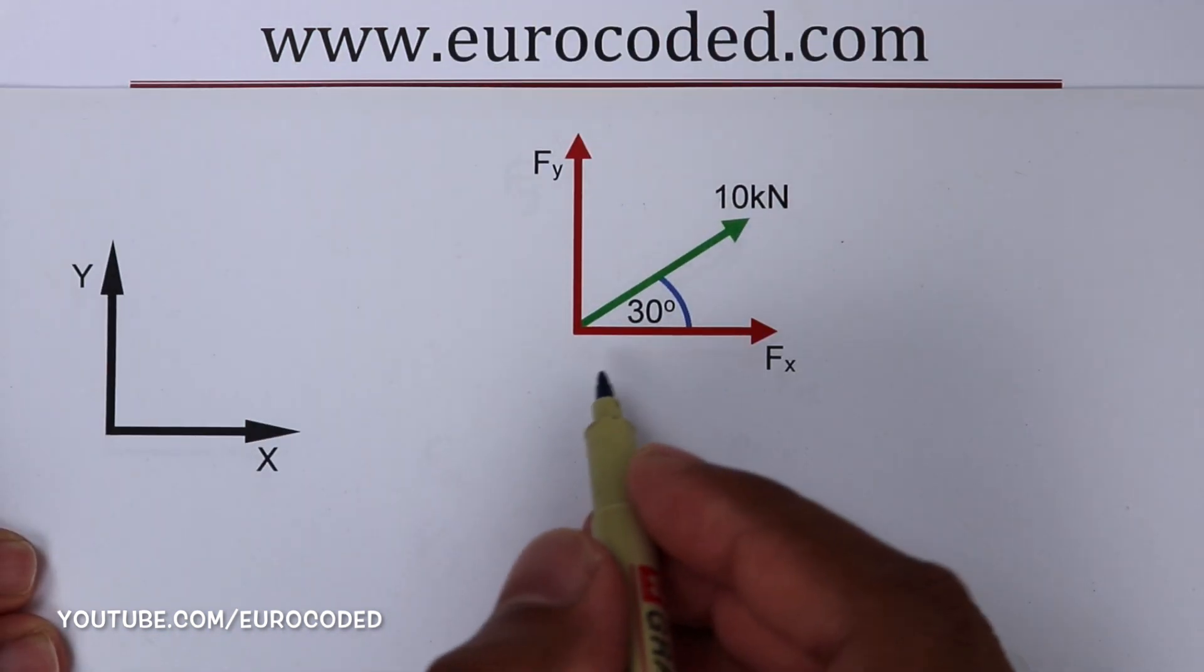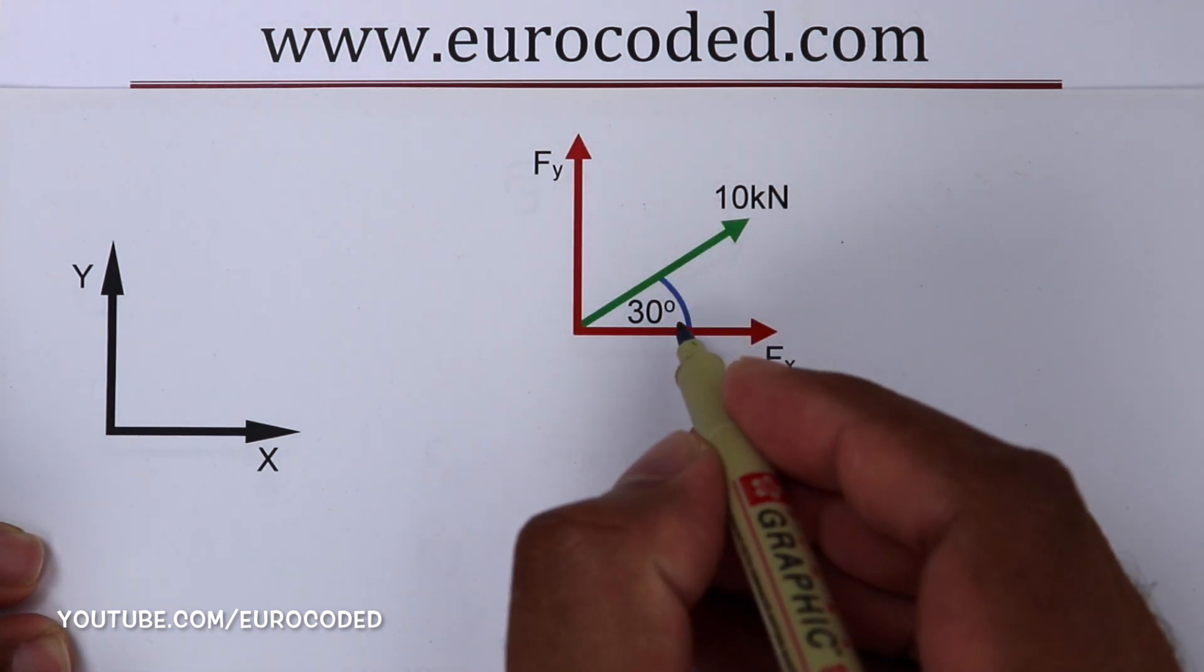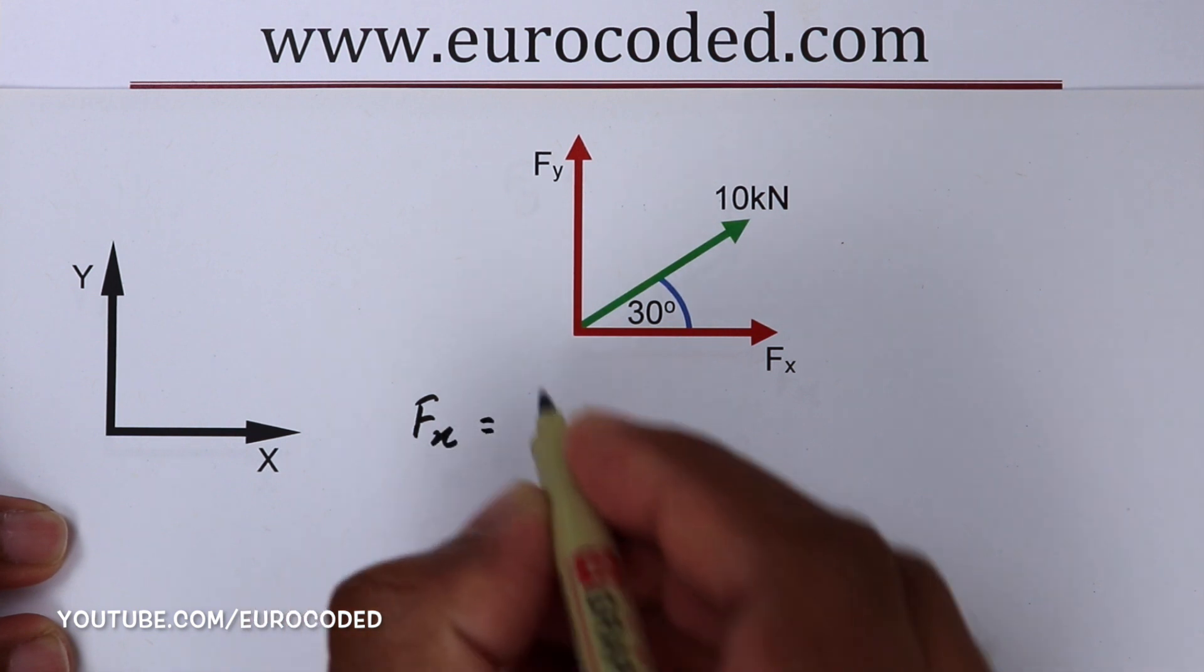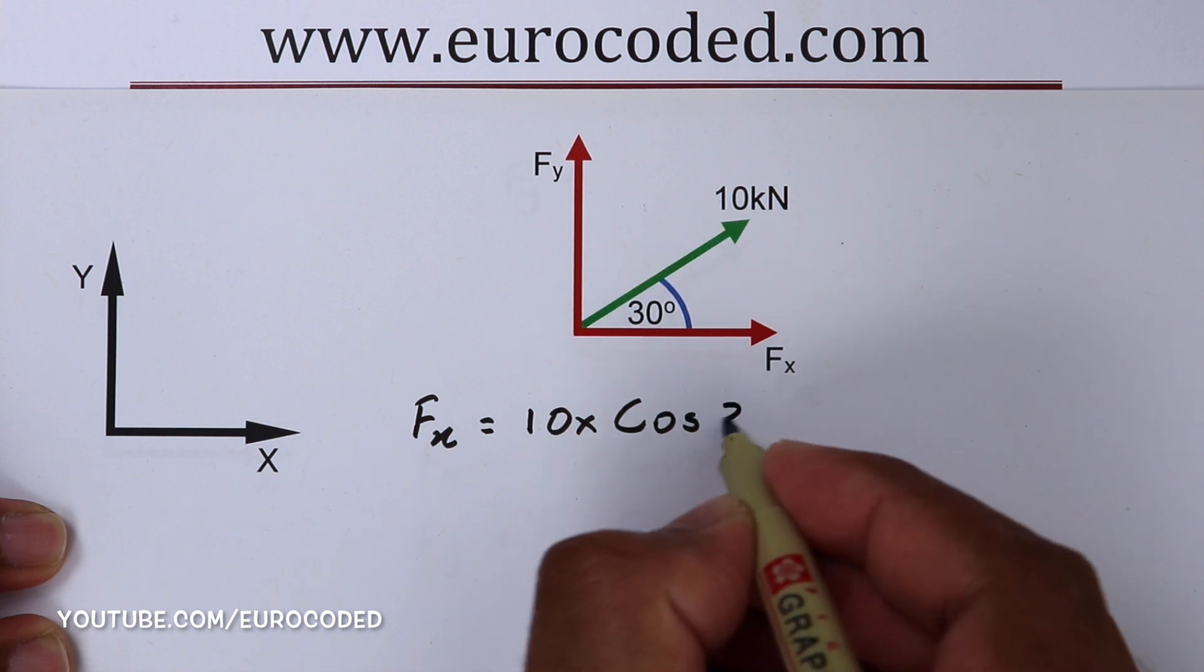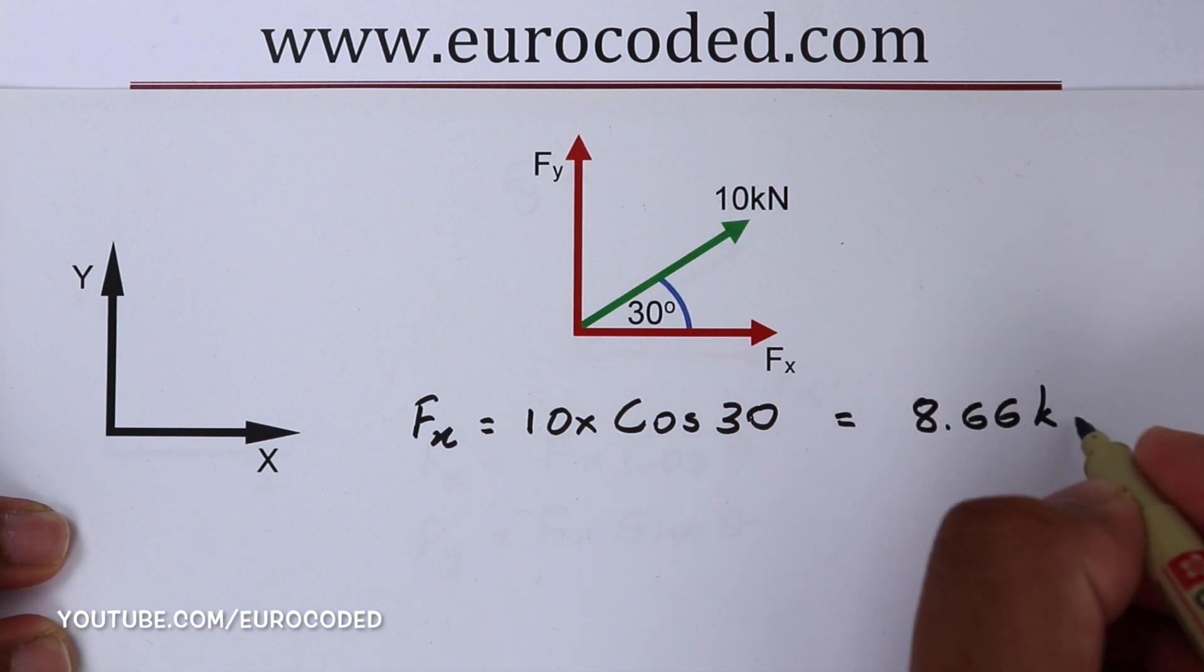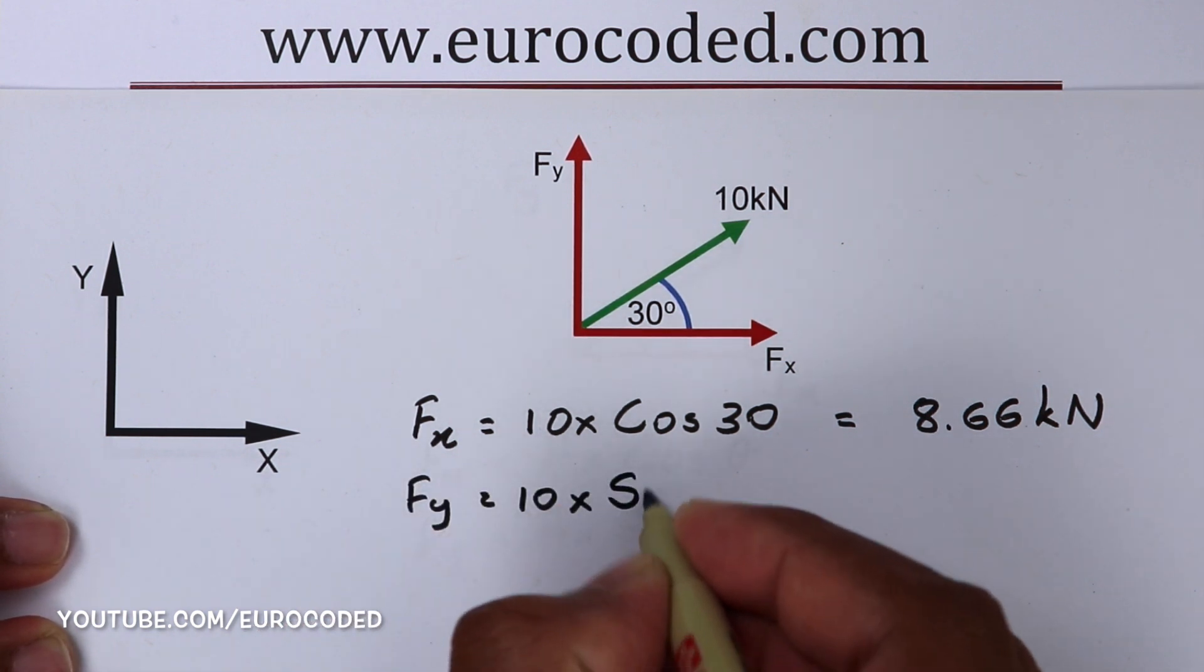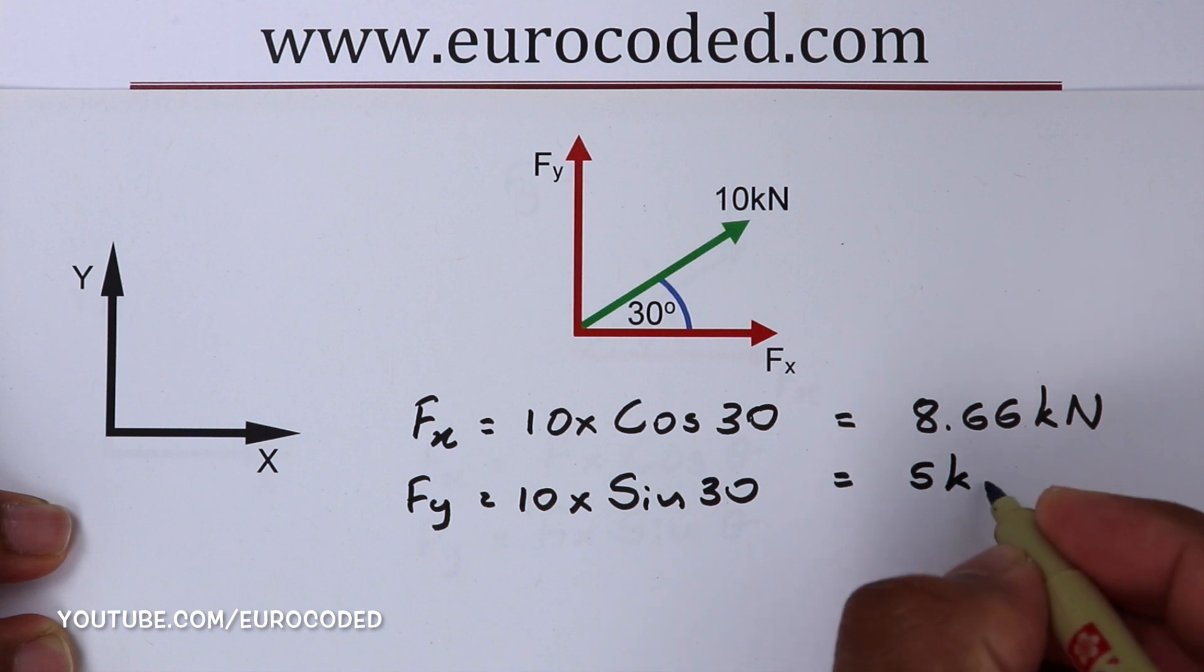Let's look at an example. In this example, we have a 10 kilonewton force acting at an angle of 30 degrees to the X axis. Therefore, we can write Fx is equal to 10 times cos 30, which is equal to 8.66 kilonewtons. And then Fy is equal to 10 times sin 30, which is equal to 5 kilonewtons.